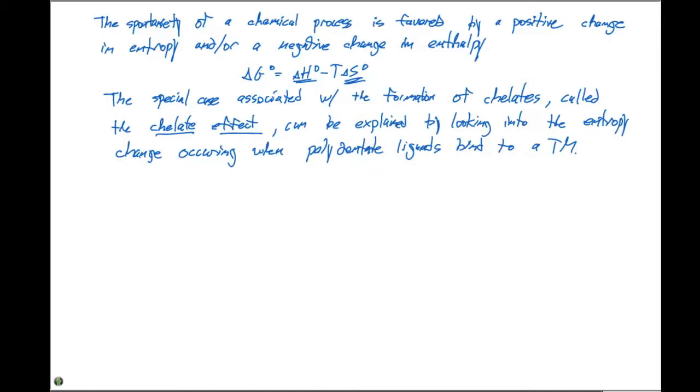We're going to consider two different reactions. The first reaction: if we have Ni(H2O)6 2+ in aqueous solution and we add six equivalents of ammonia, it's going to be in equilibrium with Ni(NH3)6 2+ plus 6 H2O. The KF is 1.2 times 10 to the 9th.